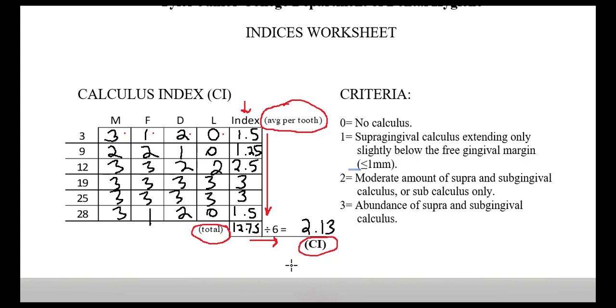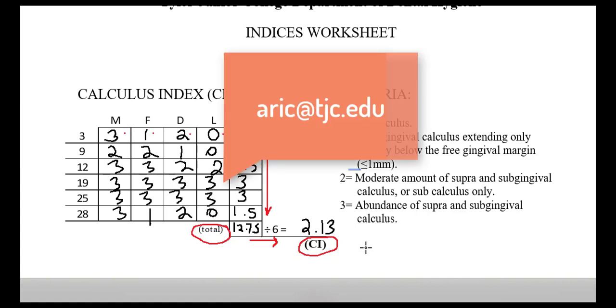When you go back and you follow up with that patient and do your second or third indices, our hope would be that we would see this number go down. This is one way of making goals with your patient that you can track, because we'll be able to track their success based on the outcome of our second or third indices. If you have any questions about indices, please feel free to email me.